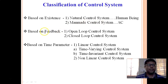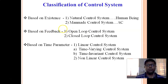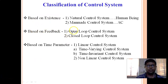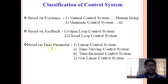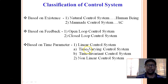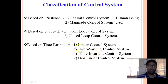The second classification is based on feedback — whether the control system has feedback or not. There are two types: open-loop control systems (no feedback) and closed-loop control systems (with feedback). The third classification is based on time parameter: linear control systems and non-linear control systems. Linear control systems are further divided into linear time-varying and linear time-invariant control systems.